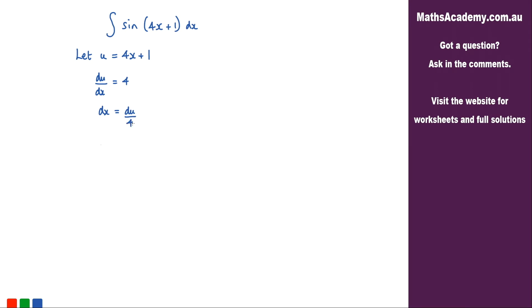And now that I've got those, I can substitute those back into that original integral. So we'll have the integral of sine. Now instead of 4x plus 1, what I've got is that 4x plus 1 is now equal to u. So I've got sine of u.